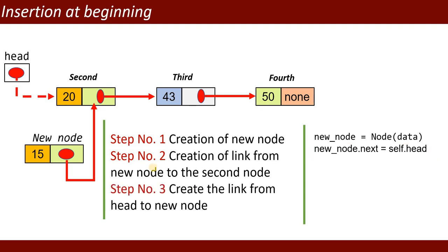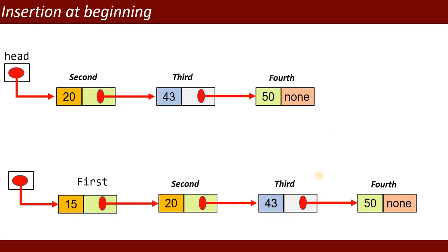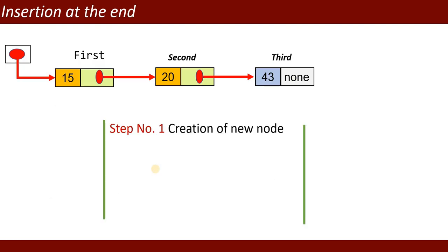Step three: create the link from head to the new node — the head pointer now points to the new node. The code is: self.head = new_node. In this way you can insert a new value at the beginning of the linked list. Before insertion you had 20, 43, and 50; after insertion you get the new node at the start, then the original nodes.